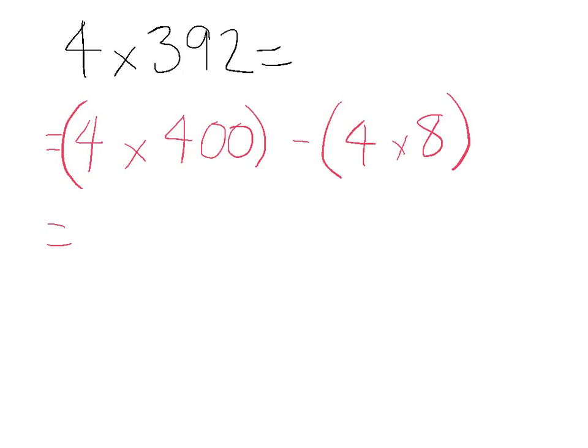So 4 times 400 is 1,600, and 4 times 8 is 32. So 1,600 minus 32 equals 1,568.